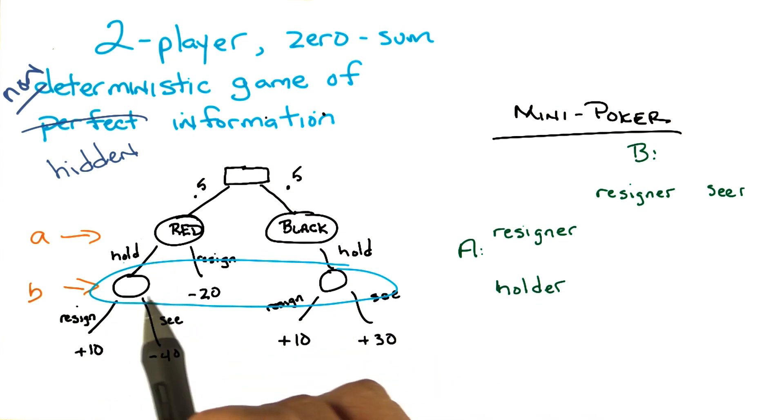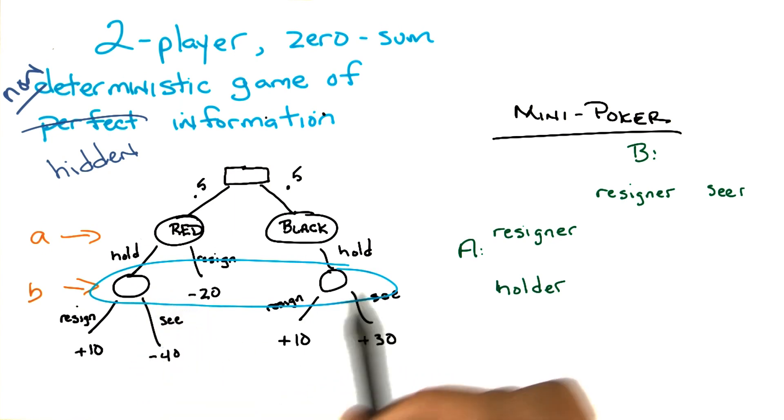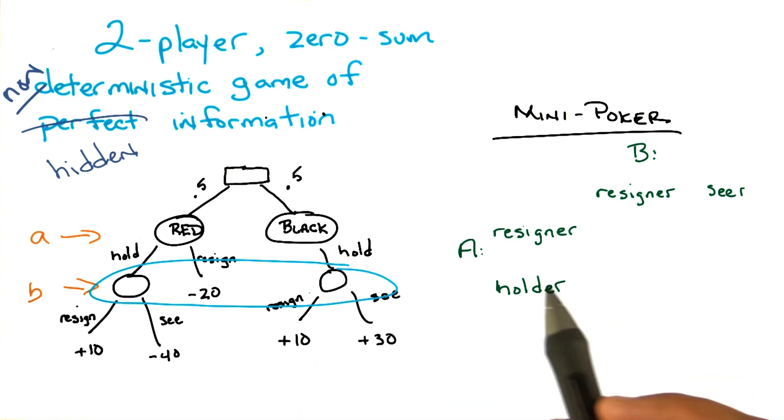In particular, if B knew that he was in this leftmost state, then he would always say see. If B knew he was in the rightmost state, then he would always resign. But he doesn't know which one, so it's not entirely clear what to do.